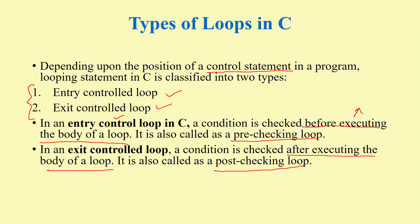For loop and while loop are examples of entry control loops. Do-while is an example of an exit control loop. In an entry control loop, the condition is checked before executing the body of the loop.